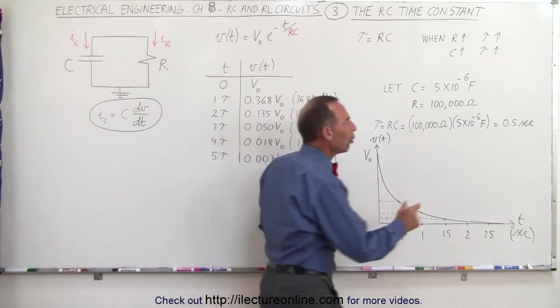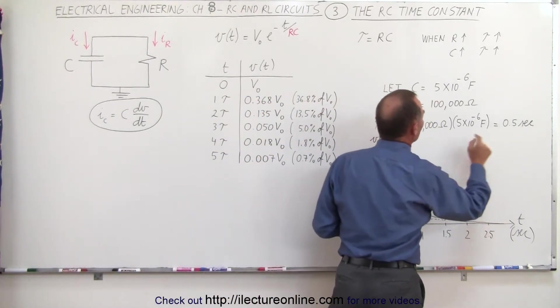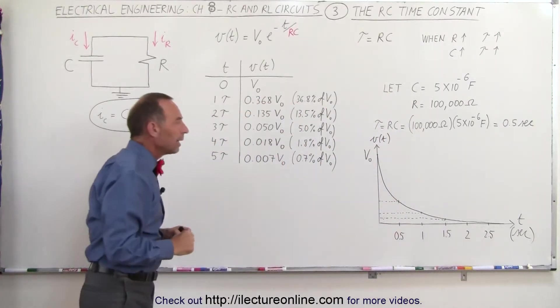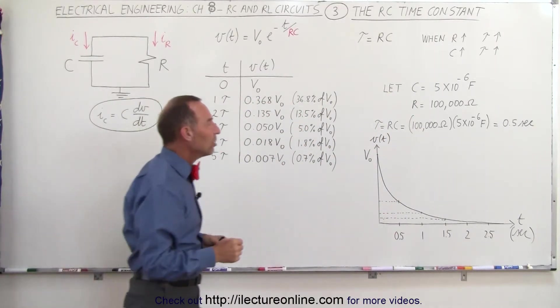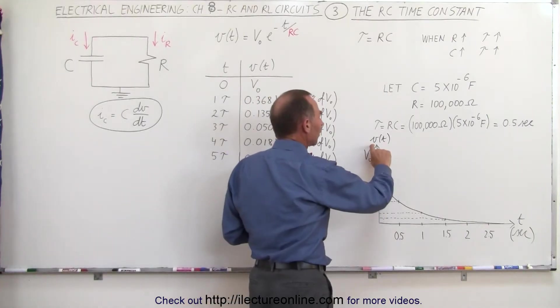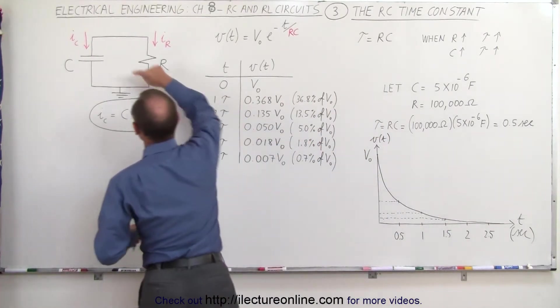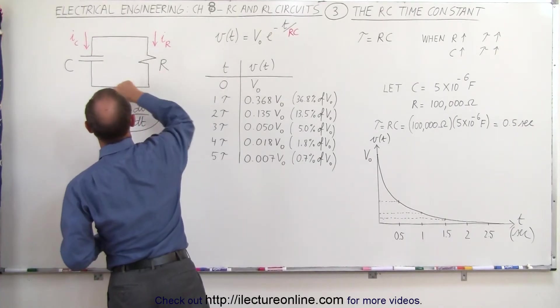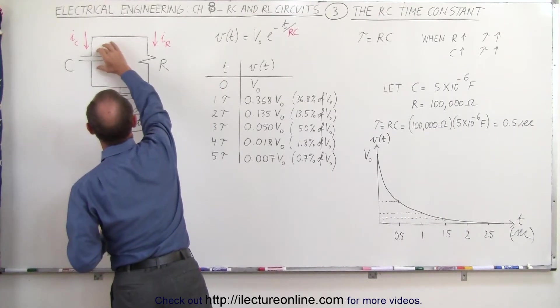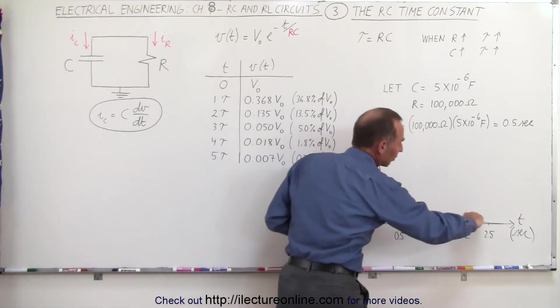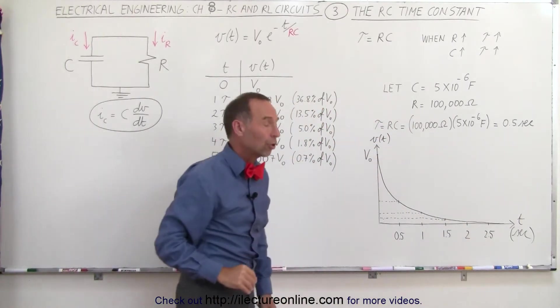In the next video, I'll show you where the units of seconds comes from multiplying ohms times farads. Now, here we have a graphical representation of the voltage across the capacitor as a function of time. Notice, as charge leaks off one side and goes to the other side of the capacitor, until the capacitor is discharged, the voltage across the capacitor will decrease like this exponential decay curve.